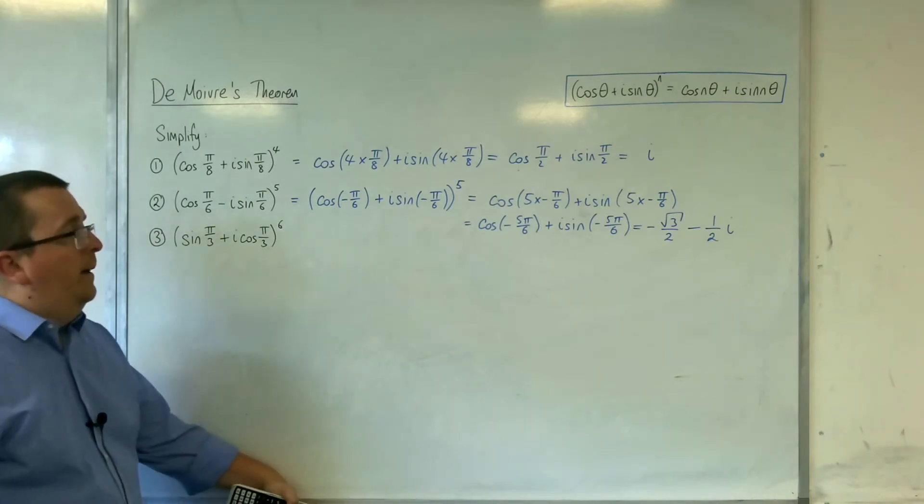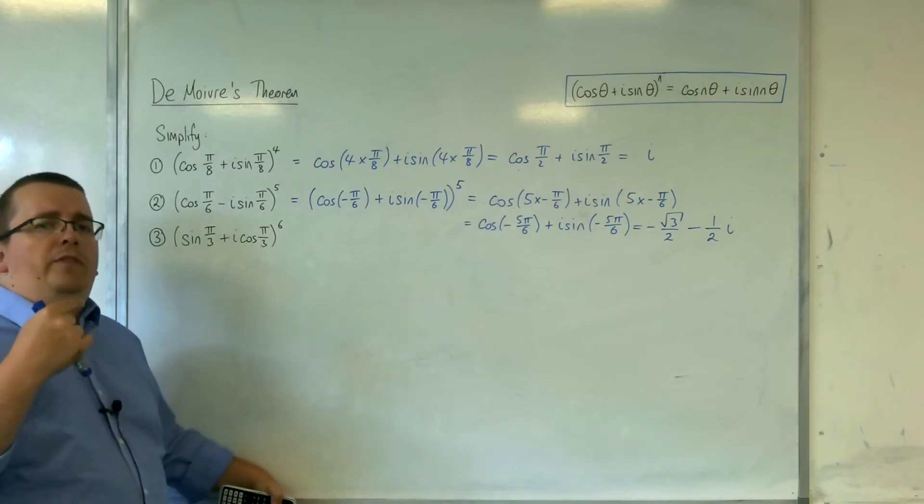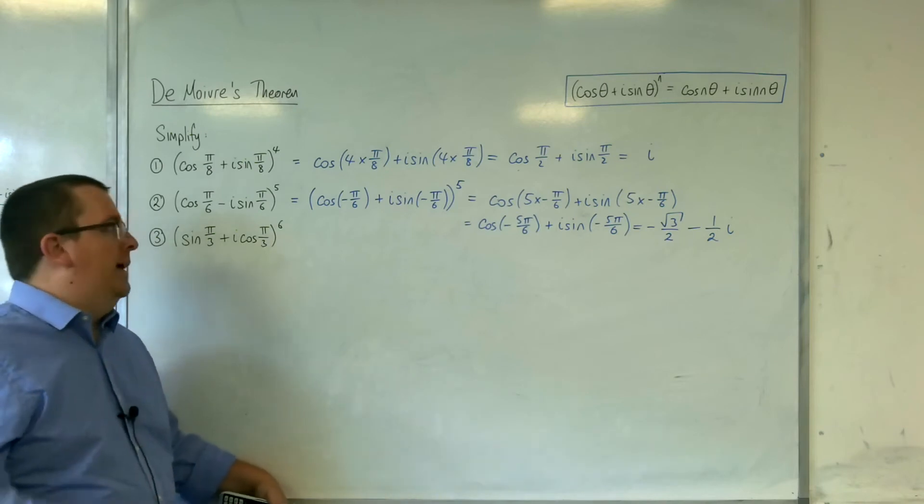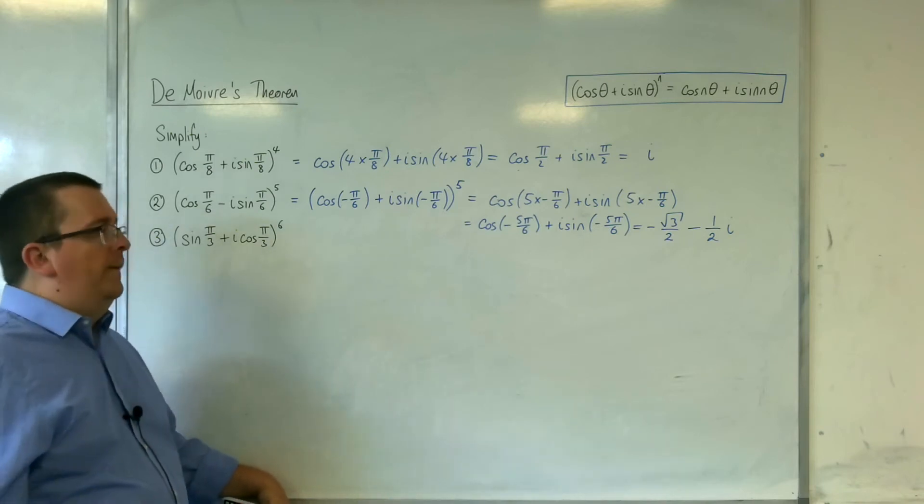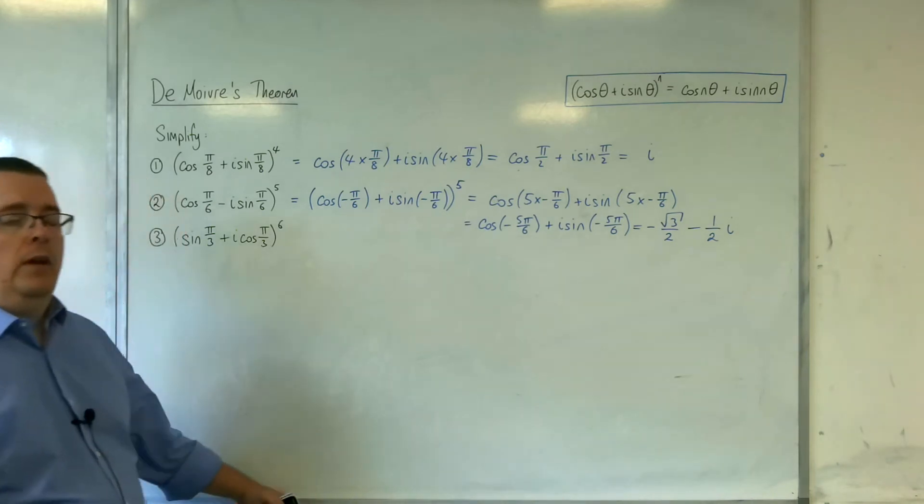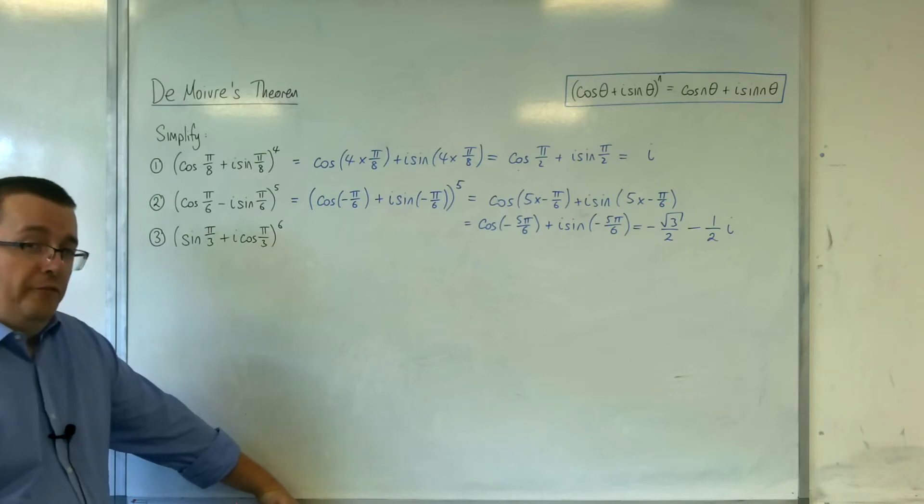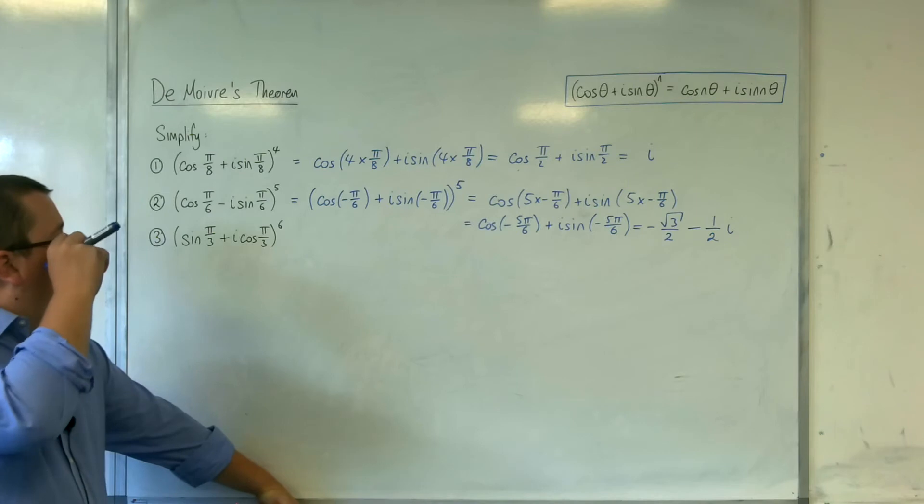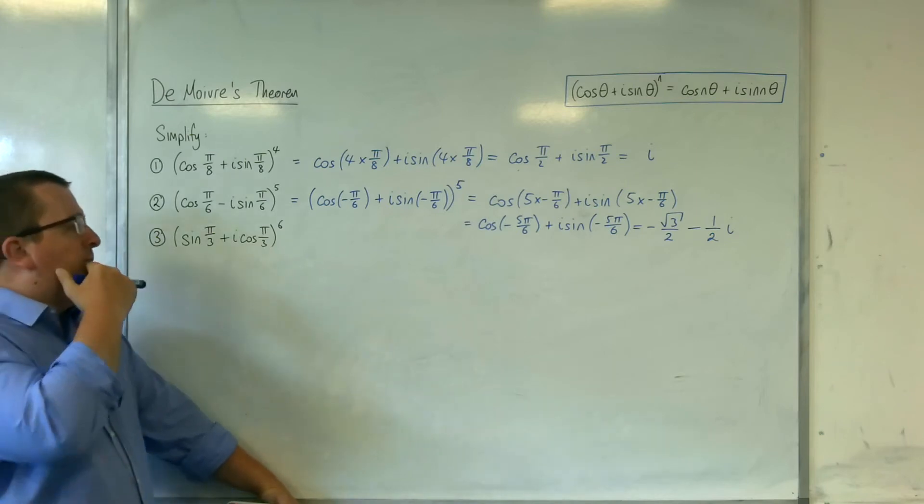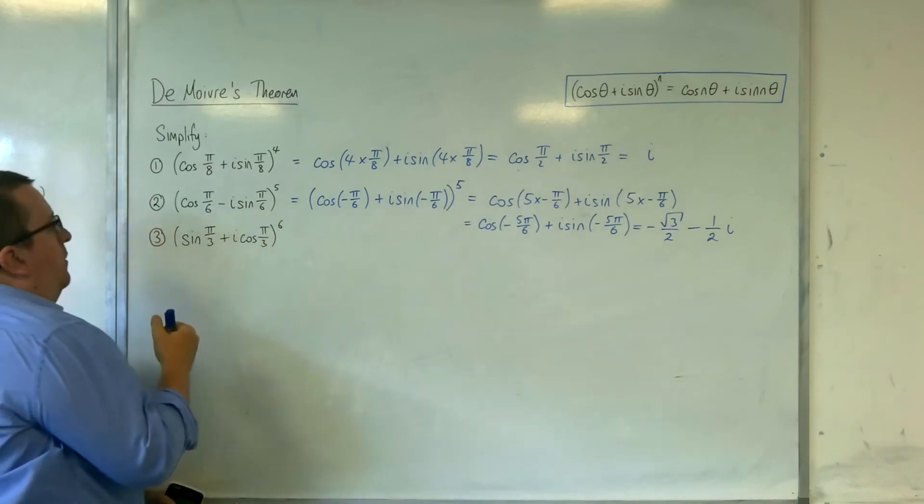Well there's a couple of alternatives. You can replace the sines with their alternative form in cosine and cosine with sine likewise. That requires you to remember those transformations. The alternative which I think I prefer is adapting it by thinking, okay, well I could factor out the i from this.